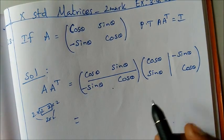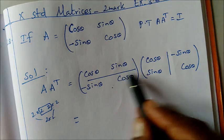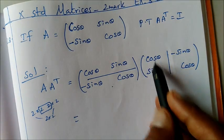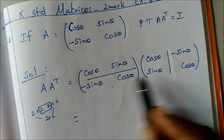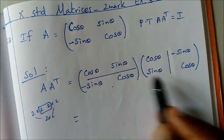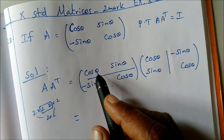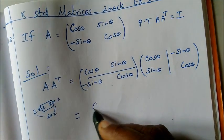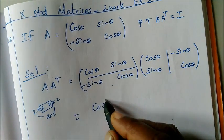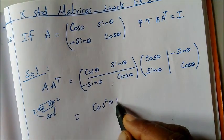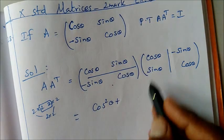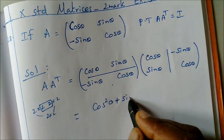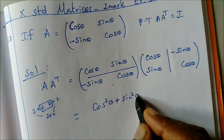Now we multiply. First row, first column: cosθ into cosθ gives cos²θ, plus sinθ into sinθ gives sin²θ.